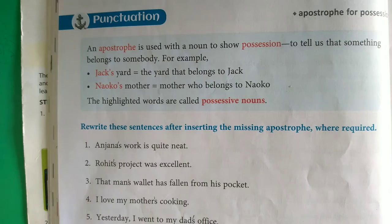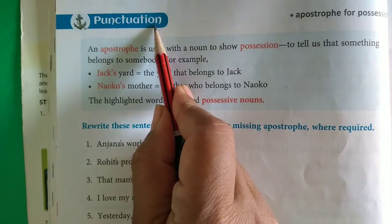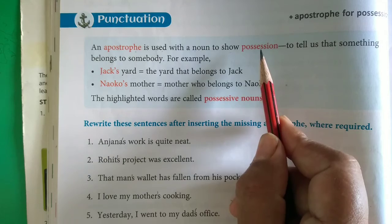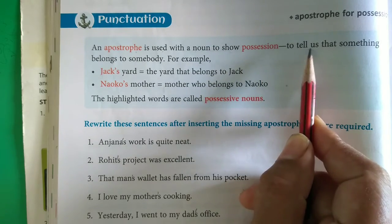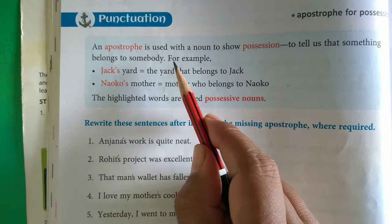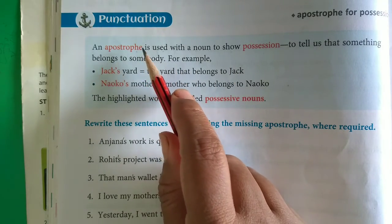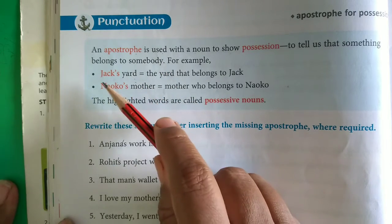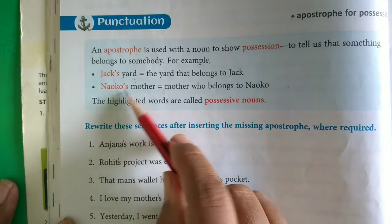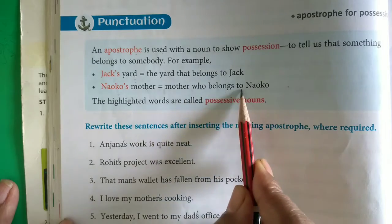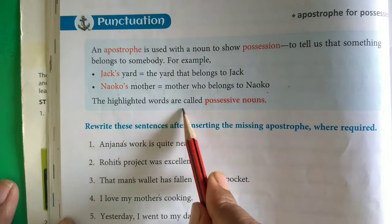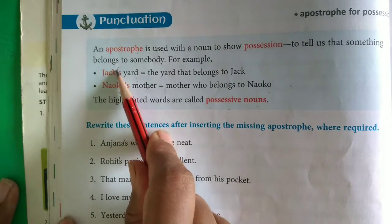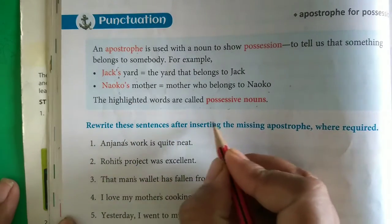Now see on the next page, there is punctuation — an apostrophe. An apostrophe is used with a noun to show possession, to tell us that something belongs to somebody. Apostrophe हम लोग use करते हैं कि यह चीज़ किसको belong कर रही है. जैसे कि Jack's yard — मतलब yard किसका है? Jack का. Nako's mother — mother belongs to Nako. Highlighted words are called possessive nouns. जब हम उसे apostrophe S लगाते हैं.